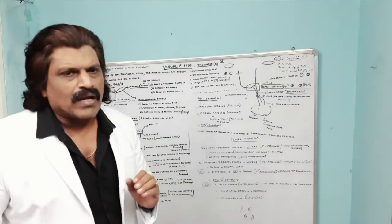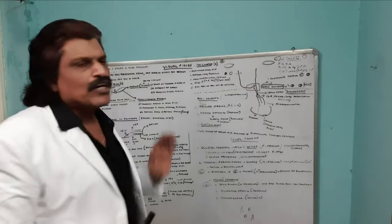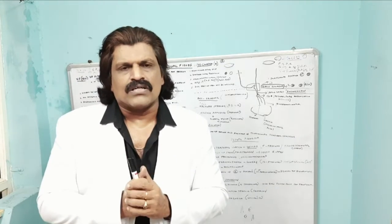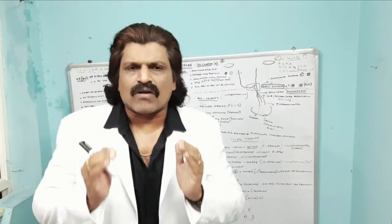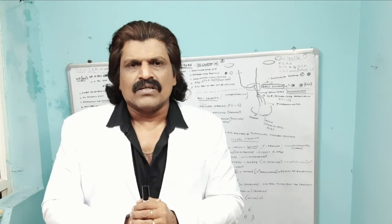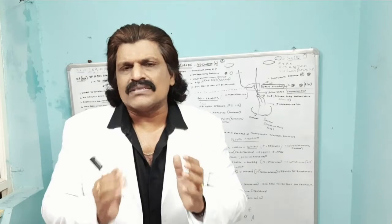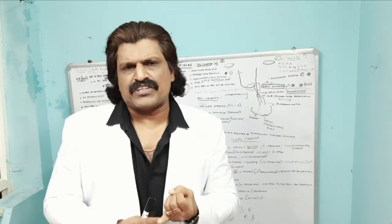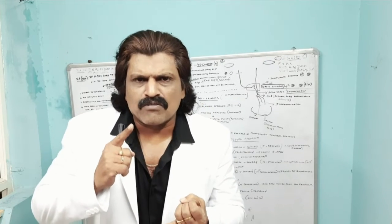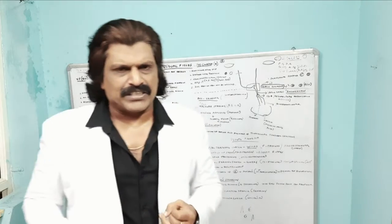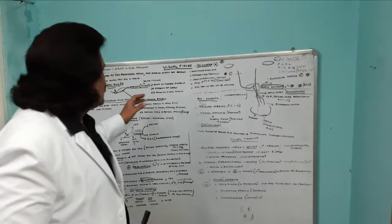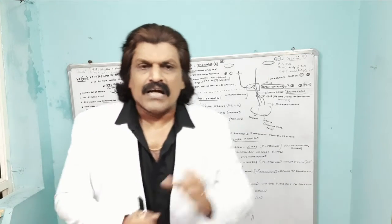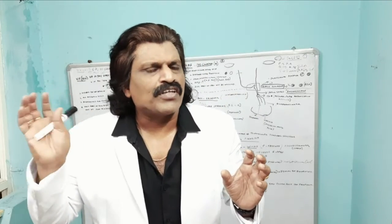Now let's see the macula. Macula is placed temporal to the optic fundus. Macula contains cones, which are responsible for color vision and acuity of vision. The highest number of cones are seen in the macula, so macula is responsible for the greatest acuity of vision, for color vision. Macula is the point of central fixation — not the fundus.